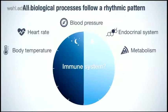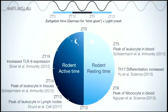Basically, all biological processes follow this rhythmic pattern — from body temperature, to metabolism, the endocrine system, and blood pressure. The circadian regulation of the immune system is not a well-explored field in immunology, but the few studies that have addressed it have had an important impact on the scientific community.